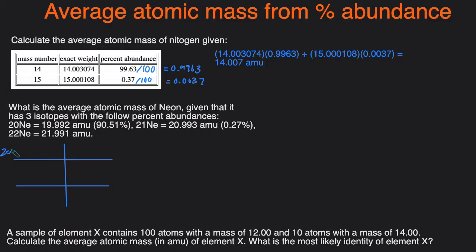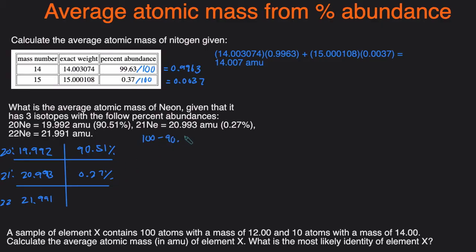For neon-20, the exact mass is 19.992 AMU and the percent abundance is 90.51%. For neon-21, it's 20.993 AMU and 0.27% abundance. For neon-22, the exact mass is 21.991 AMU and we're not given the percent abundance. But since all percentages must add up to 100%, we take 100% minus 90.51% minus 0.27%, which gives us the percent abundance of the remaining isotope: 9.22%.